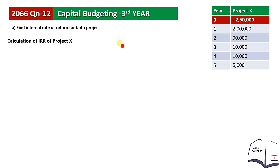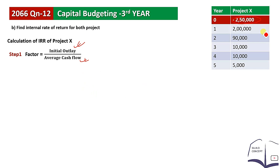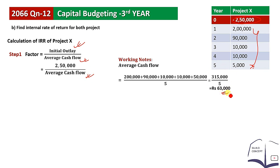Now we calculate IRR for Project X using the 3-step formula. Step 1: calculate the Fake Factor using the formula: Initial Outlay divided by Average Cash Flow. The initial investment is 2,50,000. The total cash inflows for years 1 to 5 sum to 3,15,000, giving an average of 63,000. So: 2,50,000 divided by 63,000 equals 3.9683.